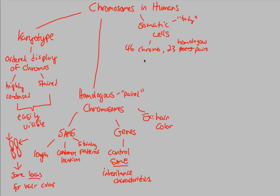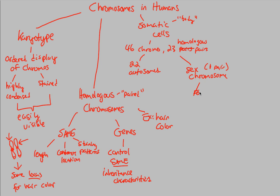Within these 23 homologous pairs, there are 22 what we call autosomes. Autosomes are the normal chromosomes — the chromosomes that tell you everything about you, every characteristic, except one thing: the sex chromosomes. Every single characteristic you have is defined by these 22 autosomes, except whether you're male or female. That is determined by one pair of sex chromosomes, which are homologous, and they either denote a female — represented by two X chromosomes (XX) — or a male — represented by X and Y.